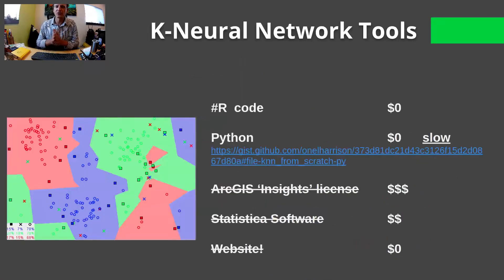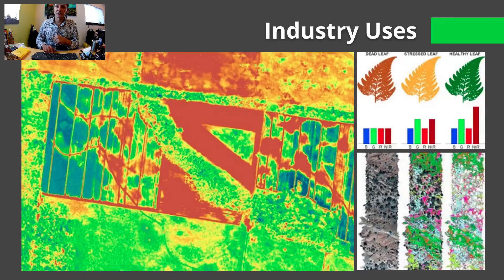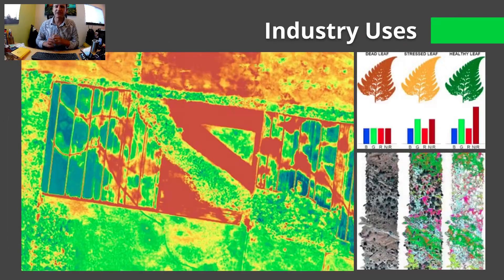So, KNN tools, same like the rest, are R and Python. However, at least to my knowledge, there's no off-the-shelf solution that you might already have, such as ArcGIS Insights, Statistica, or a website that you can load up your data.